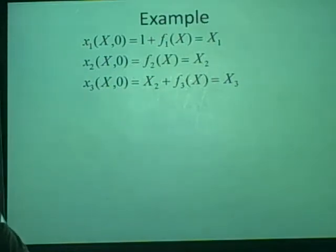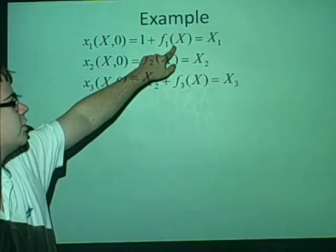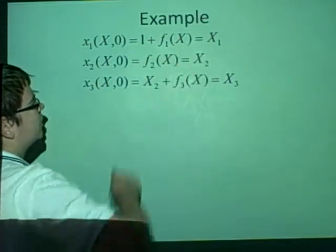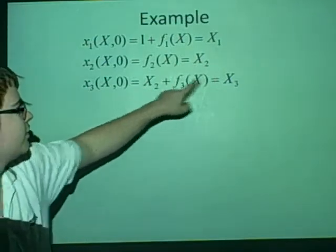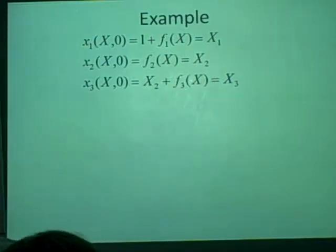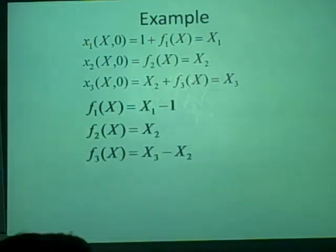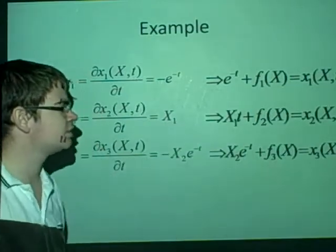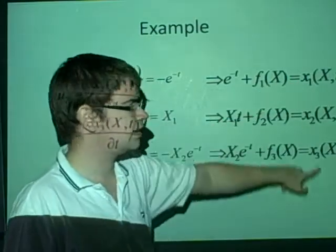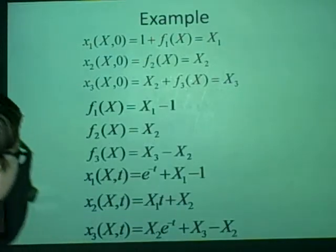Now we can rearrange it, so we rearrange and get f on its own, which gives us X1 minus 1, and that one's already done, X2. This one, we move that over there, so X3 minus X2. So we've got these, and then we can substitute these back into these equations, which get rid of all these f's, and it will just give us these little x's on their own.